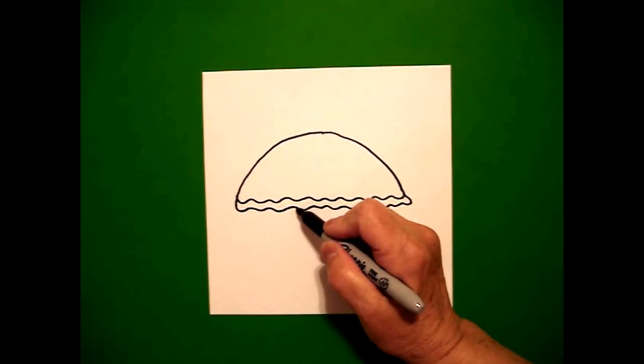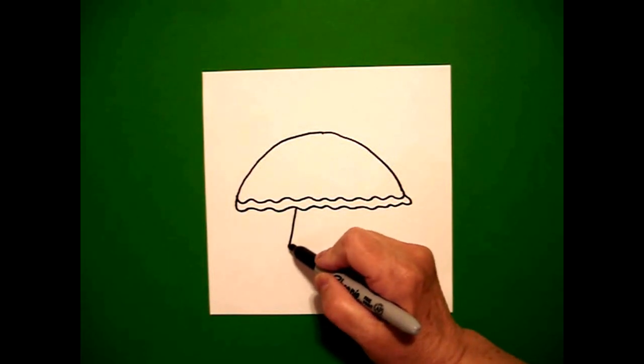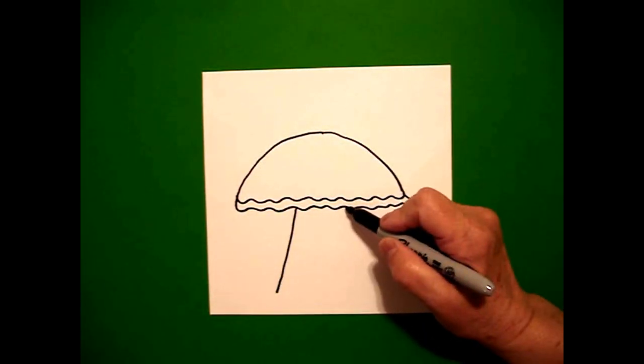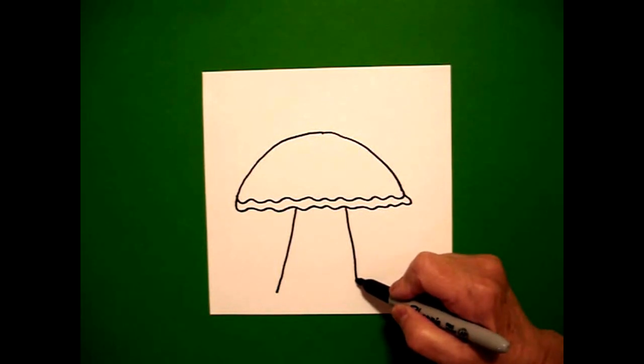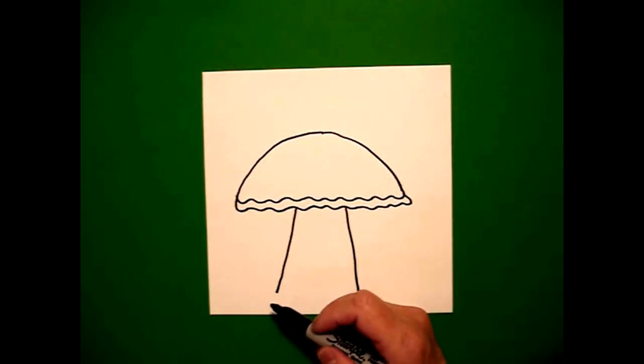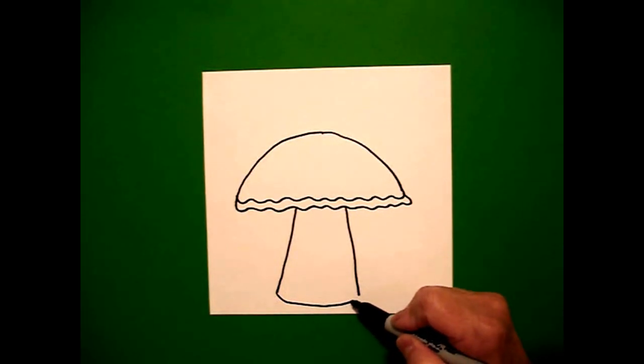Right here in the center, I'm going to draw a straight diagonal down on the left, straight diagonal down on the right, come back to the left and connect the two with a slightly curved line.